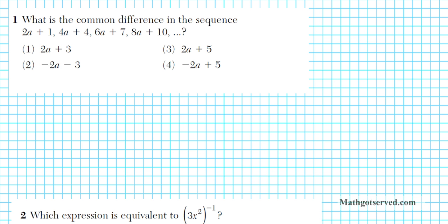Problem 1 says: what is the common difference in the sequence 2a plus 1, 4a plus 4, 6a plus 7, 8a plus 10, dot dot dot. A sequence that has a common difference is known as an arithmetic sequence — each term differs from the subsequent term by a common difference or a constant term. For an arithmetic sequence, the common difference d can be computed using the formula a-sub-n minus a-sub-(n minus 1).